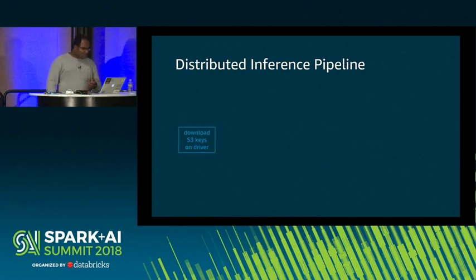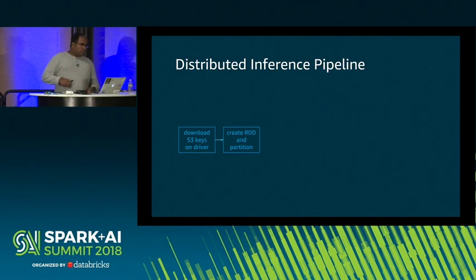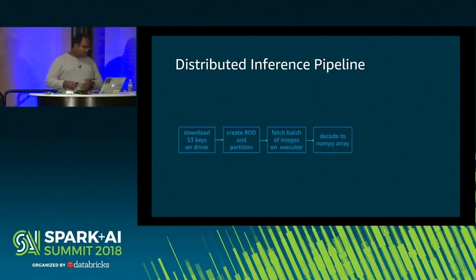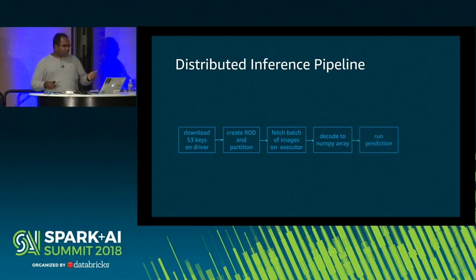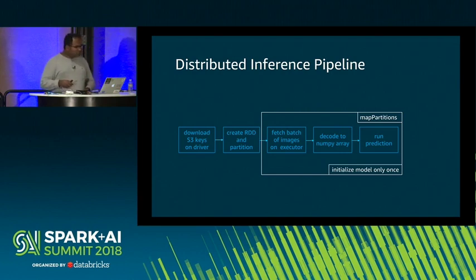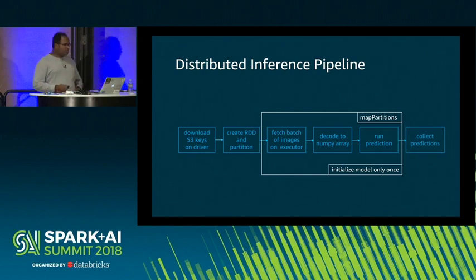Let's look at the pipeline. I have all the images on S3 — you can also use HDFS or other storage. I create an RDD of S3 keys so we don't need to pass images between driver and executor, and partition this across the cluster. We fetch a batch of images on the executor — since these operations can be heavily parallelized, a batch size greater than one is just another dimension in the tensor. We convert to a NumPy array, feed it to the library, and run predictions. All of this happens inside a Spark mapPartitions method. We initialize the model only once to avoid latency costs, then collect the predictions.